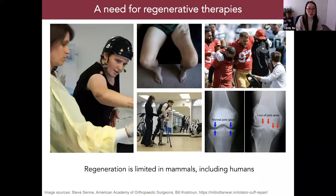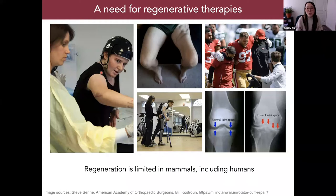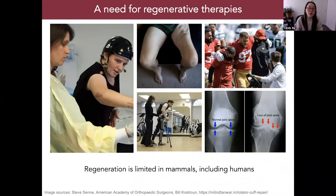Before we get into that, mammals, which also include us humans, have a very limited capacity for regeneration. Although there are a number of tissues known to regrow, such as the liver, skeletal muscle, and skin, the majority of adult human tissues do not regenerate. Instead, when injured due to disease or trauma, this often leads to scar formation and fibrosis, which can impair structure and function. There's a clear need for regenerative therapies to develop treatments that enhance wound healing and improve outcomes of traumatic injuries or age-related diseases.